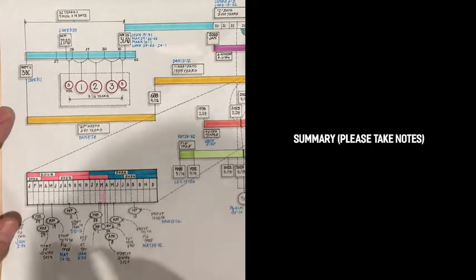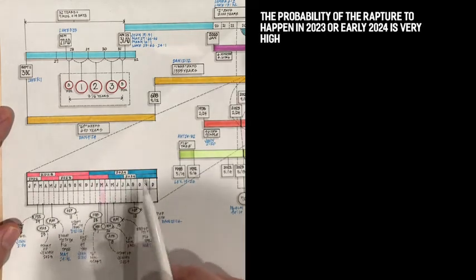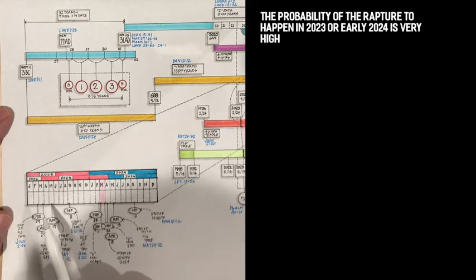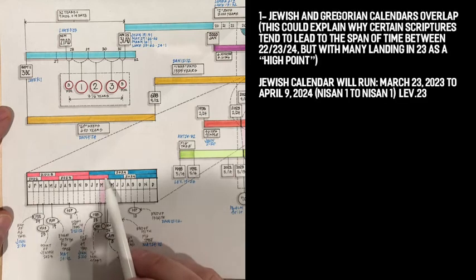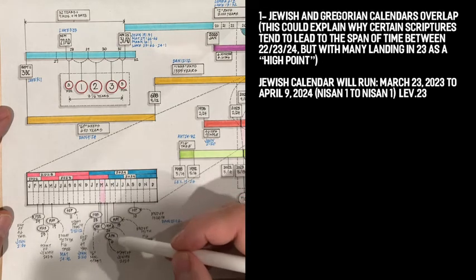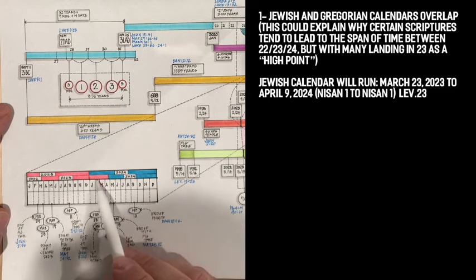So let's try to summarize this. It is a very high chance that the rapture and tribulation will all start within this year 23 and beginning of 24. Why? First of all, because we have this overlap of the Jewish calendar, which will start in March this year, March 23, and in April of next year, April 8. So you can see there's an overlap in the first few years, 24, where we have both 23 Jewish and 24 Gregorian happening at the same time.